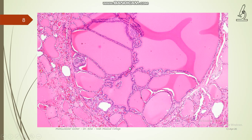Another feature visible here is small short papillae — do not call it papillary carcinoma thyroid if this is visible. If someone wants to ask about papillary carcinoma thyroid, they'll tell you other features such as the nuclear features and features of atypia, which we'll talk about in detail in the papillary carcinoma thyroid presentation. These infoldings might be present, so don't call it papillary carcinoma.